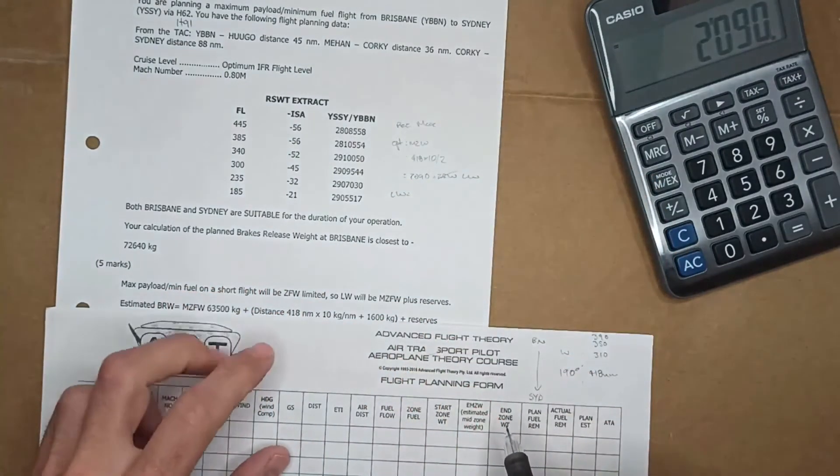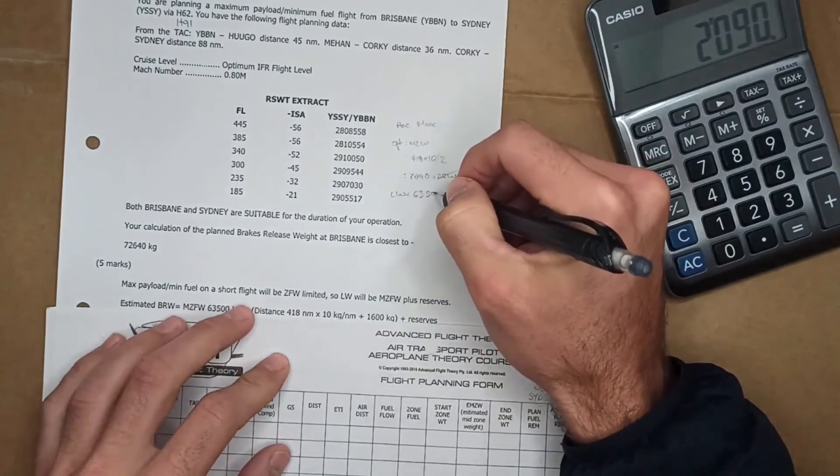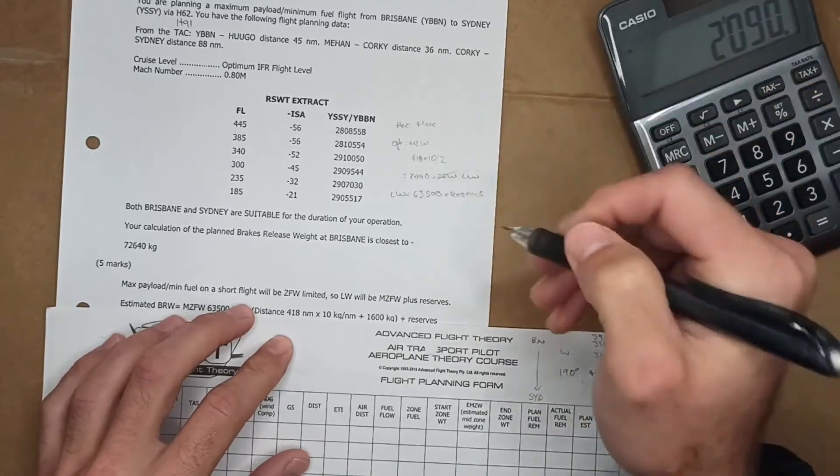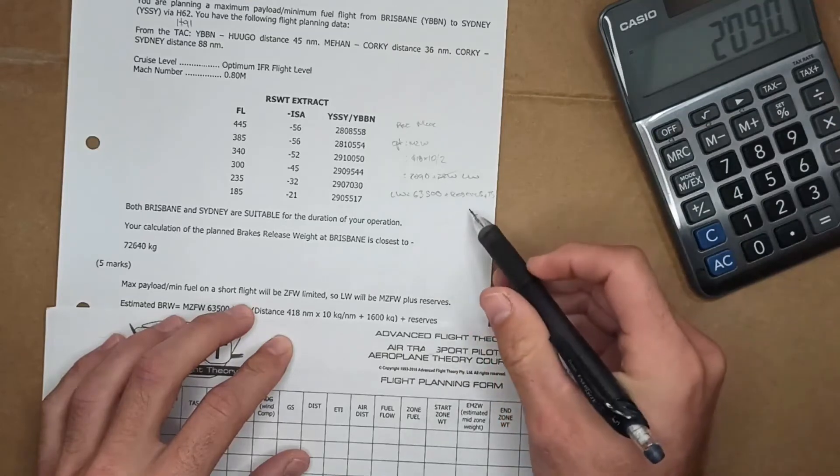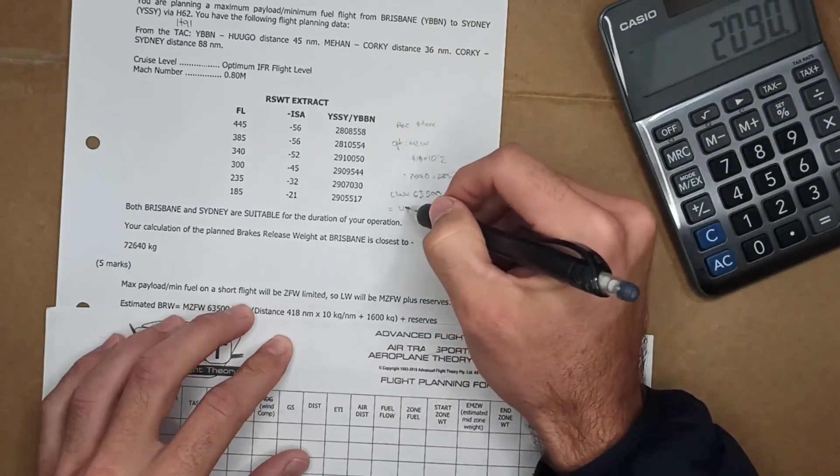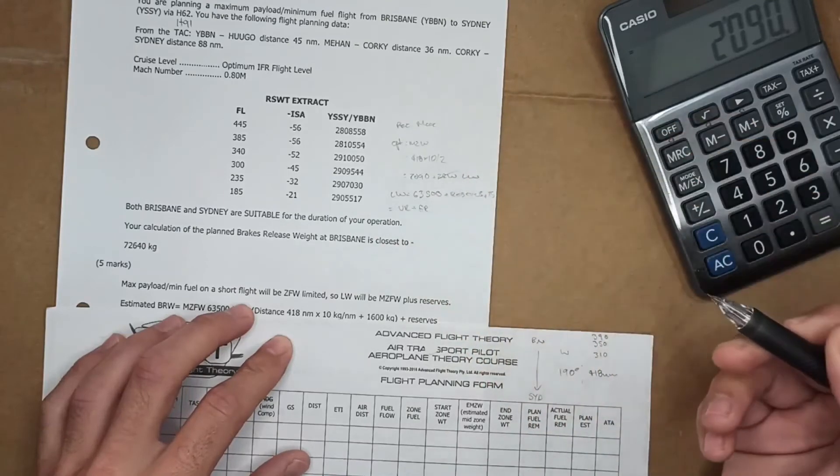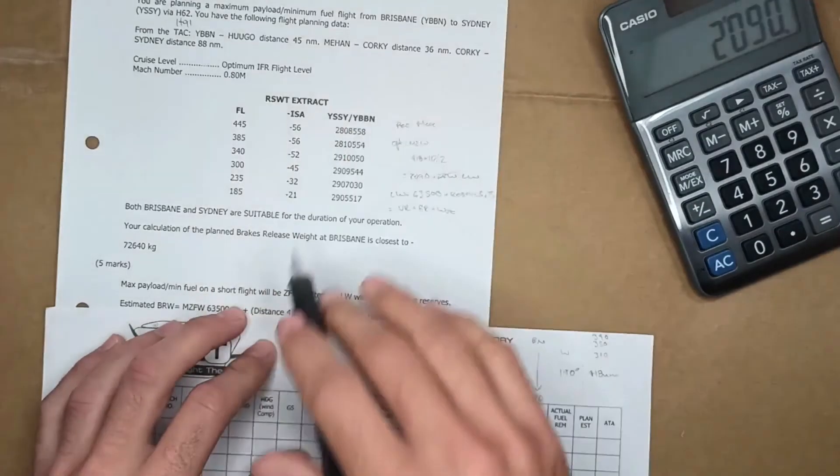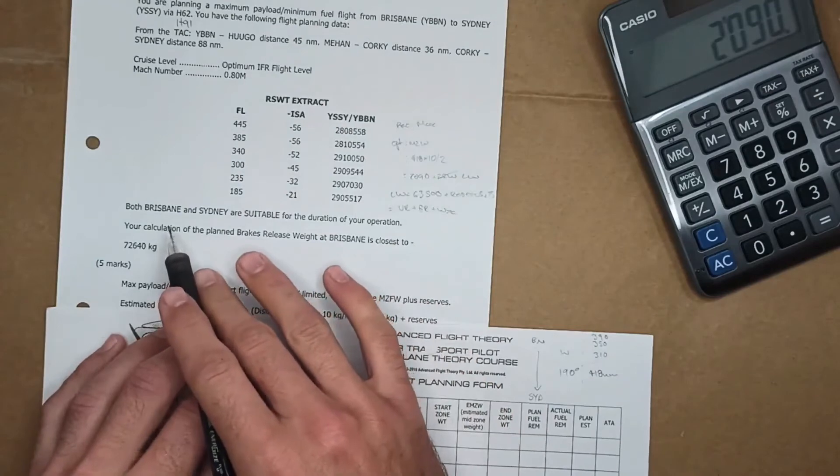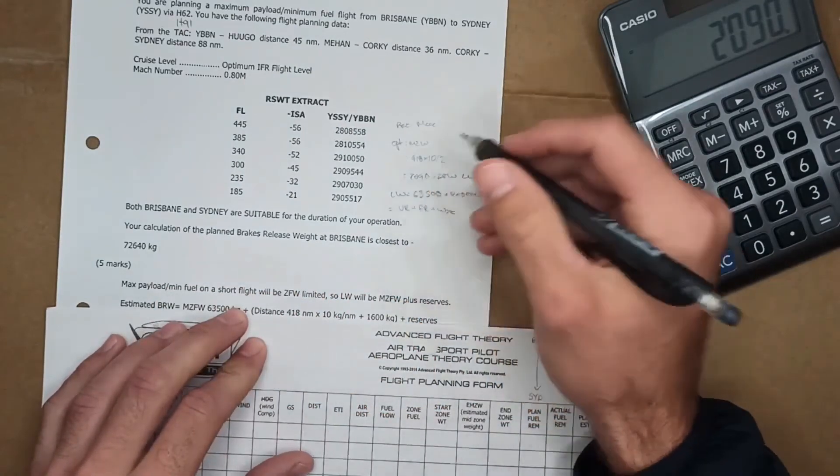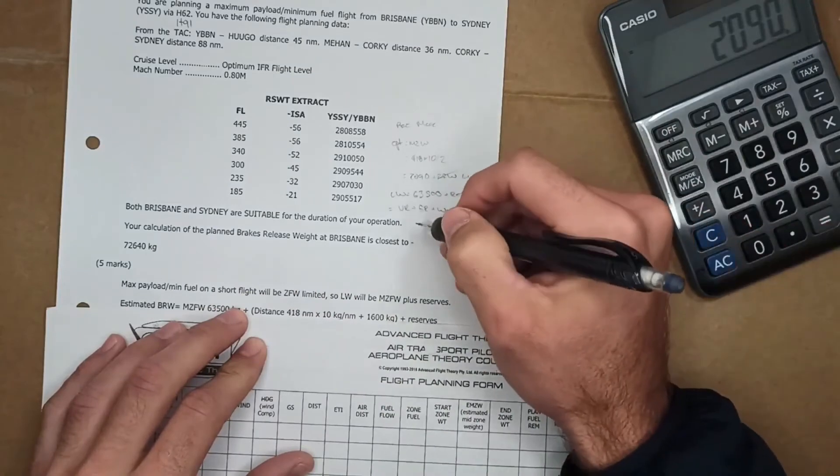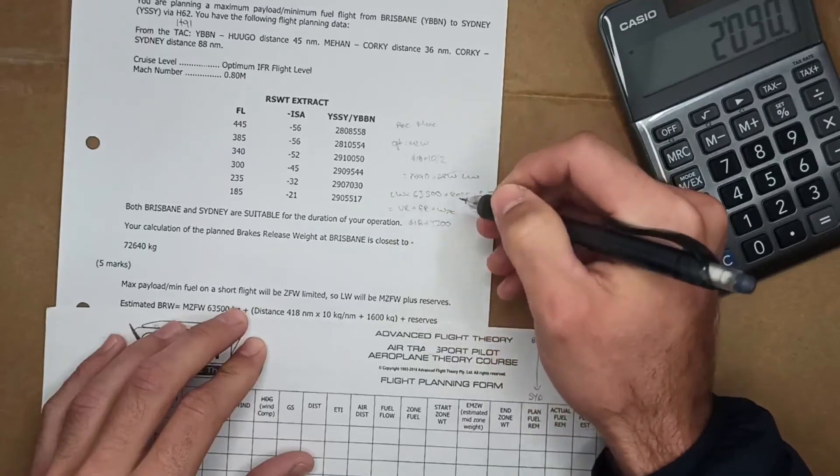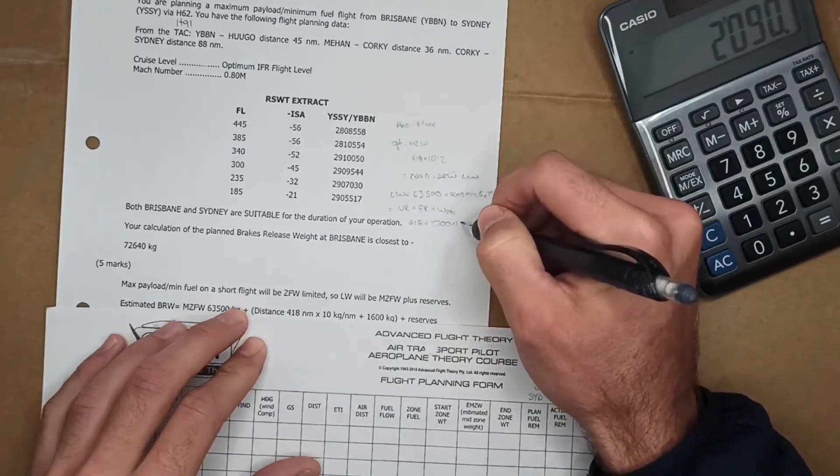Because we know it's a maximum payload we're going to be zero fuel weight limited. So zero fuel weight for this flight, they don't tell us so we just assume 63,500 plus reserves, plus taxi shut down. Straight away we can say we're going through the reserves calculation. We know we need VR, we need a fixed reserve and we need any weather holding. We don't have any weather holding requirements on this question because it's a normal flight plan and both Sydney and Brisbane are suitable.